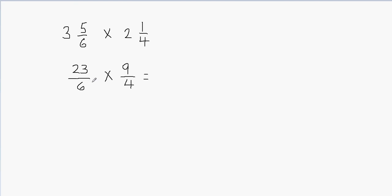Now this is a simple multiplication problem. We can just go ahead and multiply the numerator with the numerator and the denominator with the denominator. So 6 times 4 gives me 24, and then 23 times 9 gives me 207.